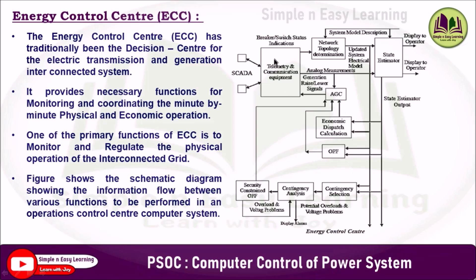The system consists of telemetry communication equipment, network topology determination, state estimator, analog measurement signals, automatic generation control, economic dispatch calculation, optimal power flow, contingency analysis, security constraint, and optimal power flow. This complete system is called the energy control center.